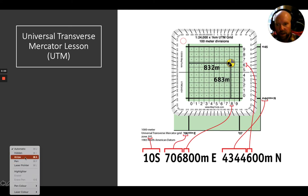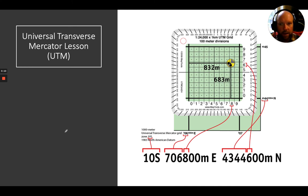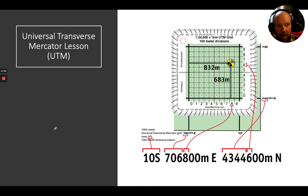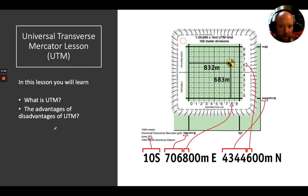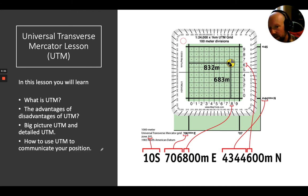Hello folks, Judson here from Kootenay Backcountry Guides. On this rainy day in October, I'm going to give you a snippet of a lesson plan out of our traditional Navigation 101 course on the Universal Transverse Mercator System, otherwise known as UTM. This covers how to express or find a position on a map using UTM. In this lesson you'll learn what UTM is, its advantages and disadvantages, the bigger picture of UTM zones, detailed UTM breakdowns, and how to use UTM to communicate your position.